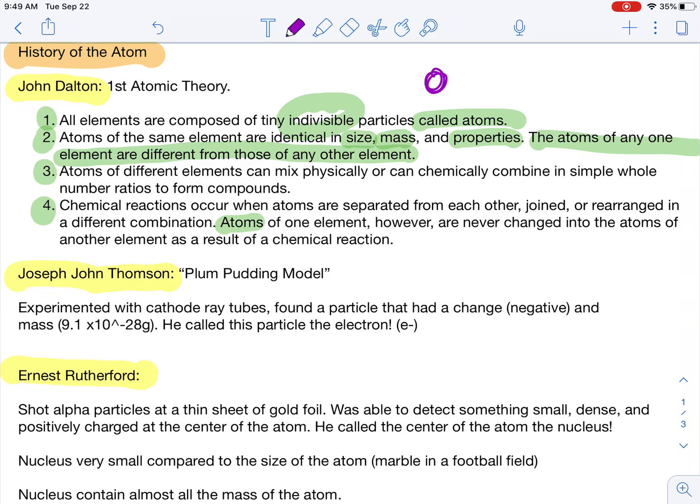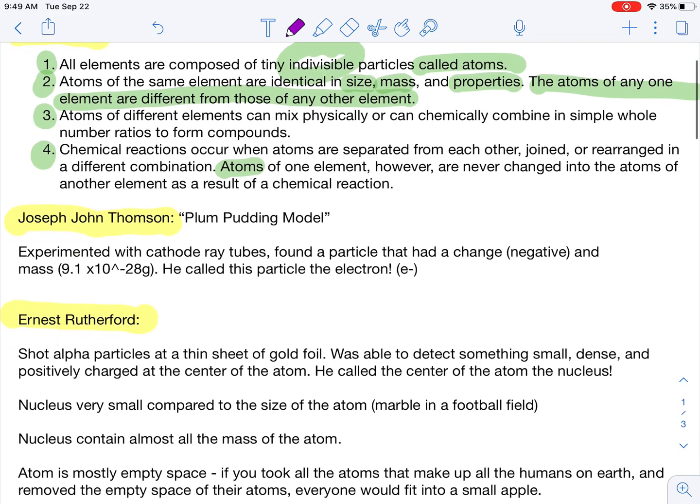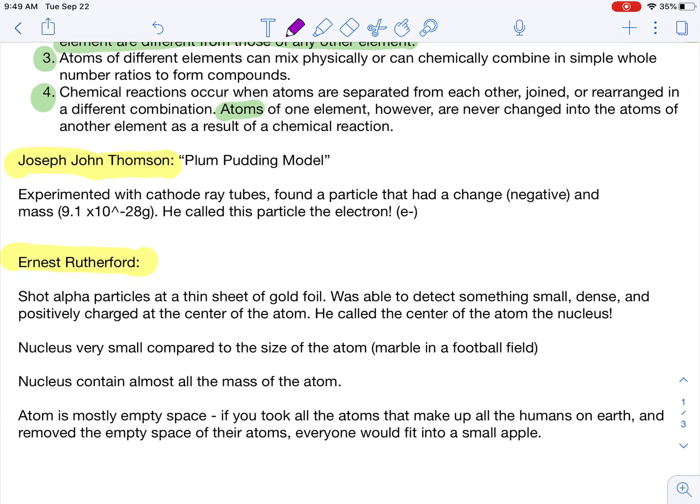And then John Dalton's atom was very simple. It was a sphere. It looked kind of like this. There was nothing fancy about it. It was just a little tiny speck that he thought everything was made up of. The next scientist changed that idea.